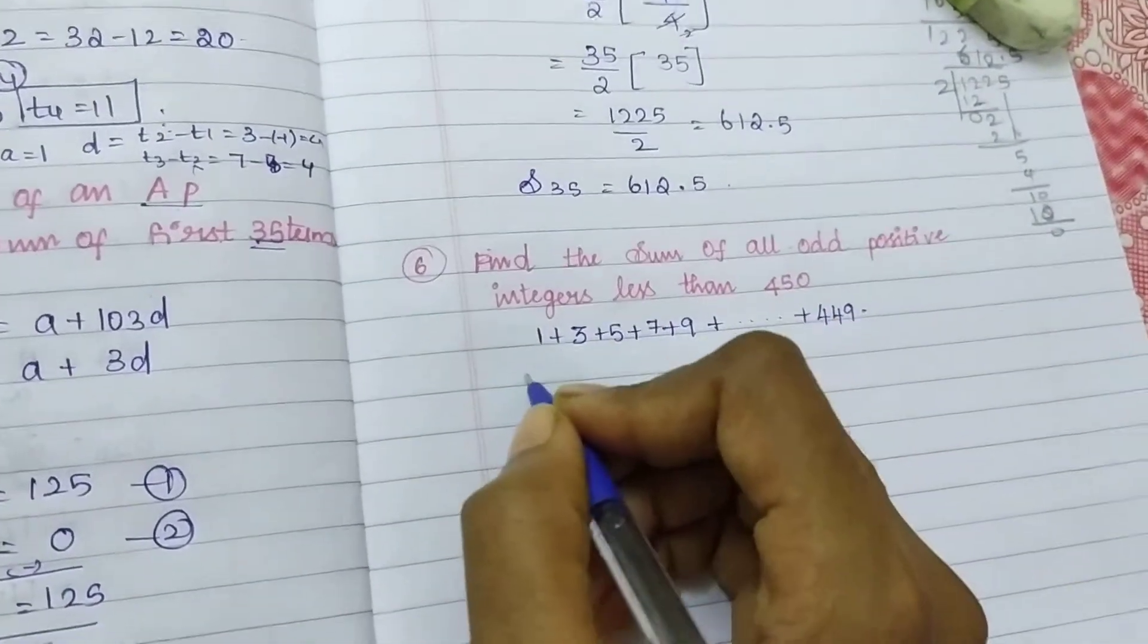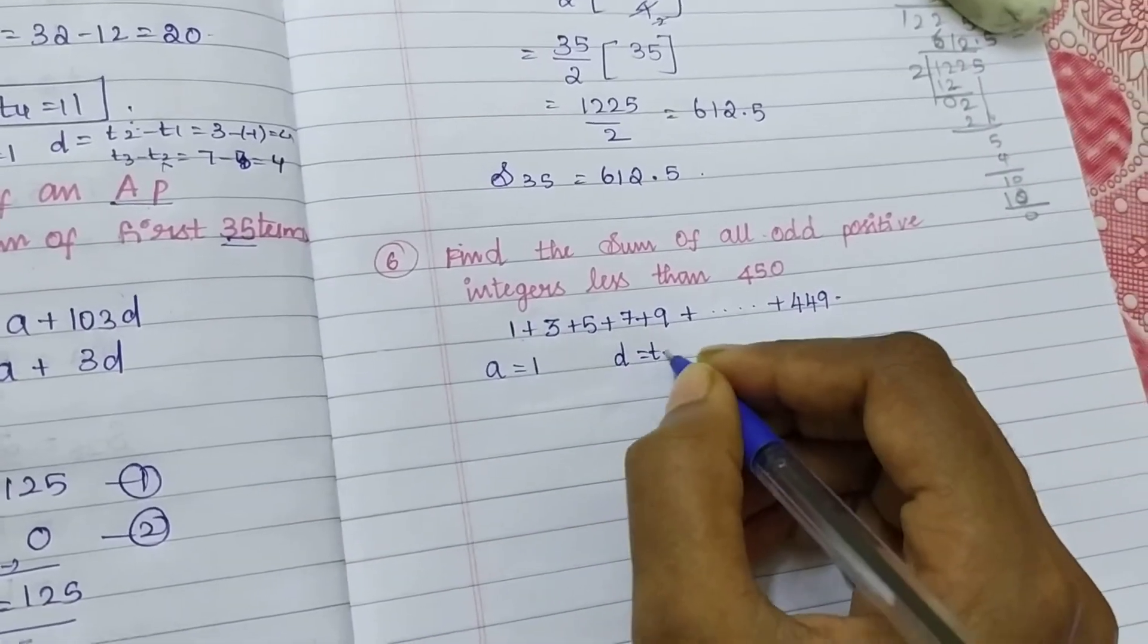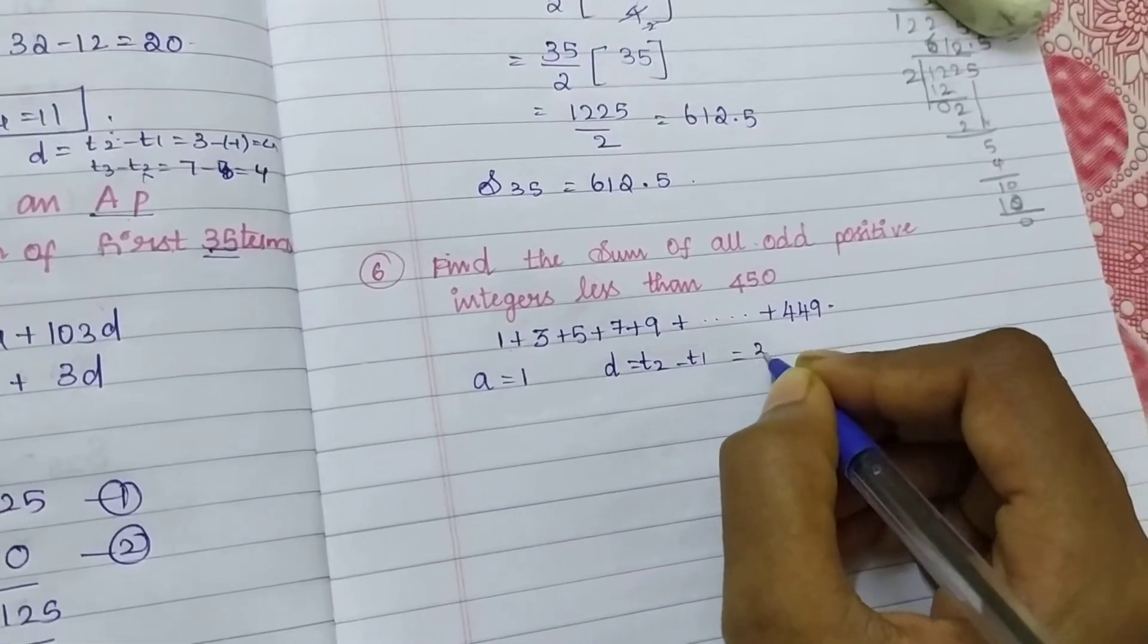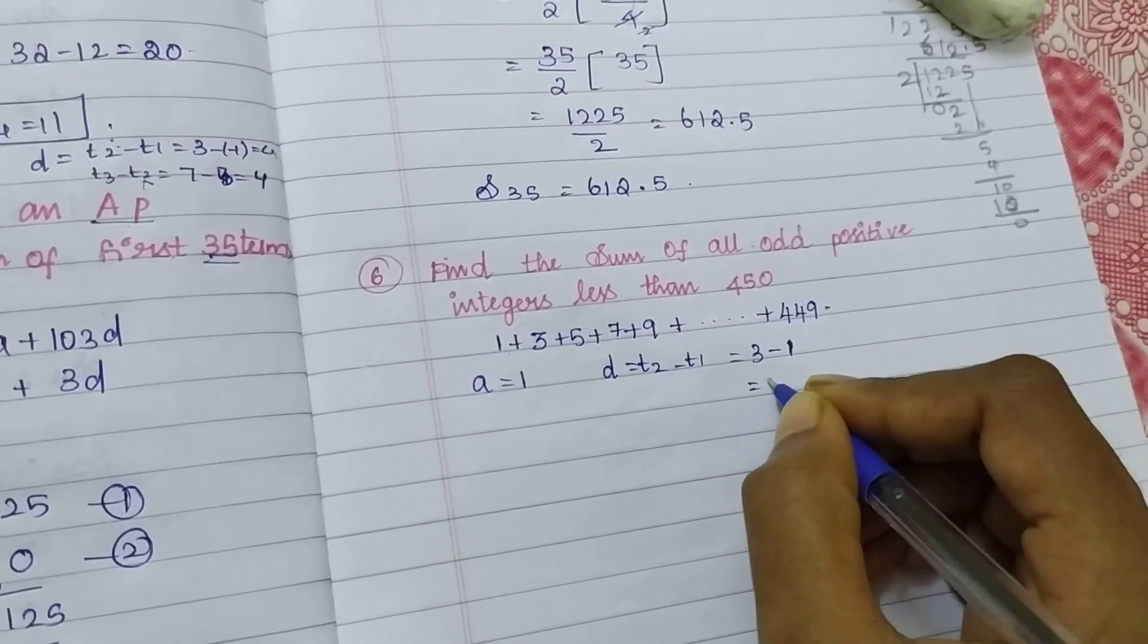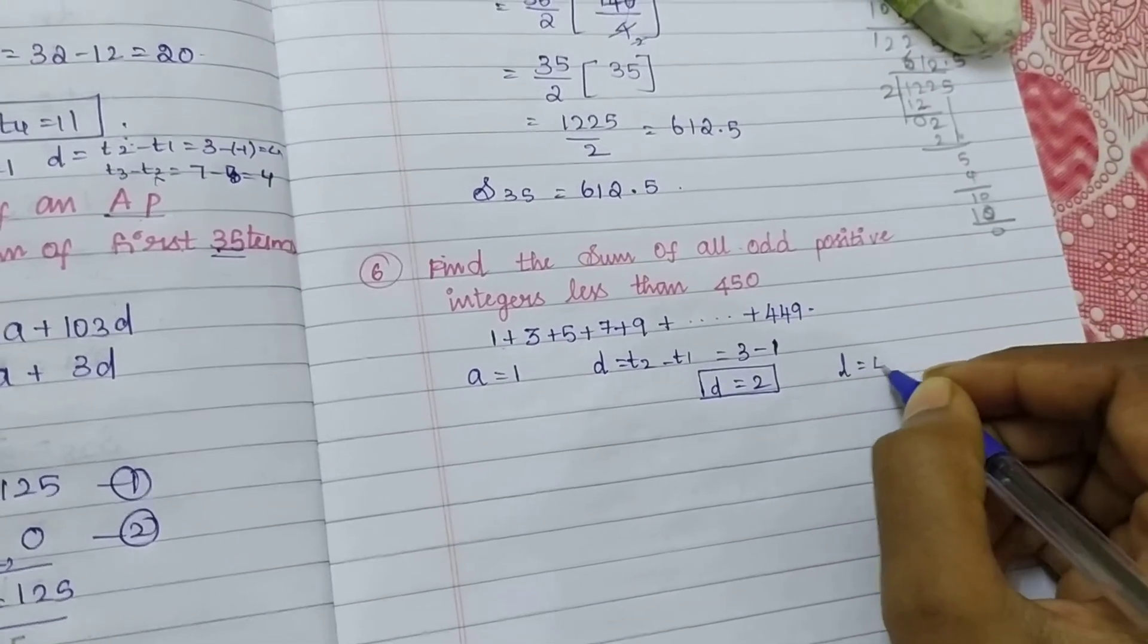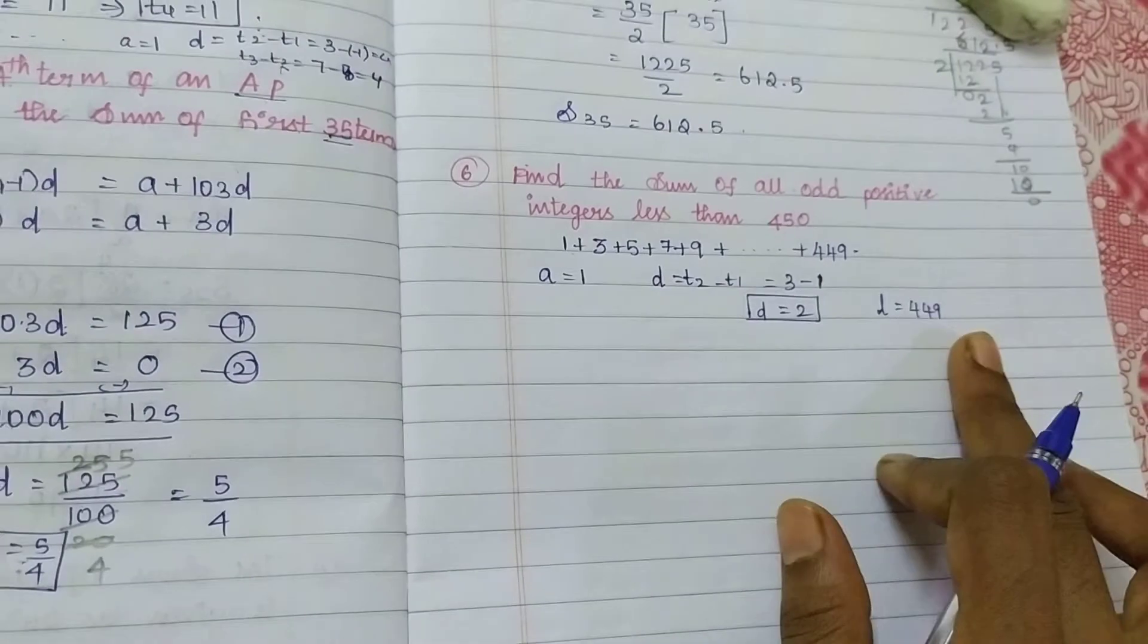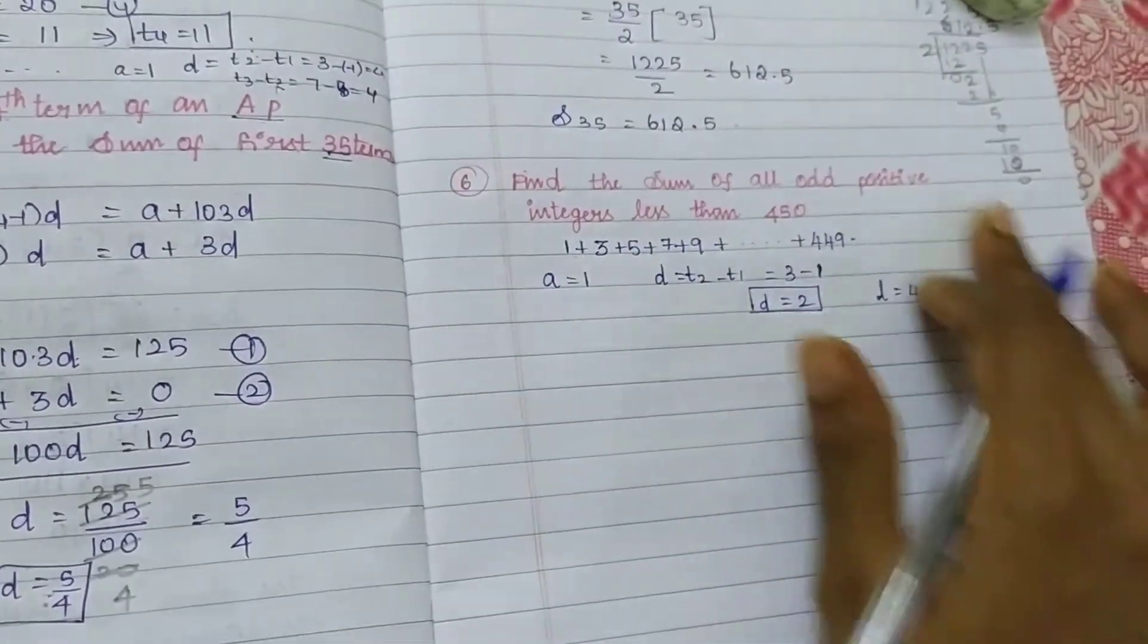I know my first value is equal to 1. Second value, T2 minus T1, 3 minus 1 is equal to 2. That is my D value. Here last value is 449. I know A, D and 449. So sum of these values.